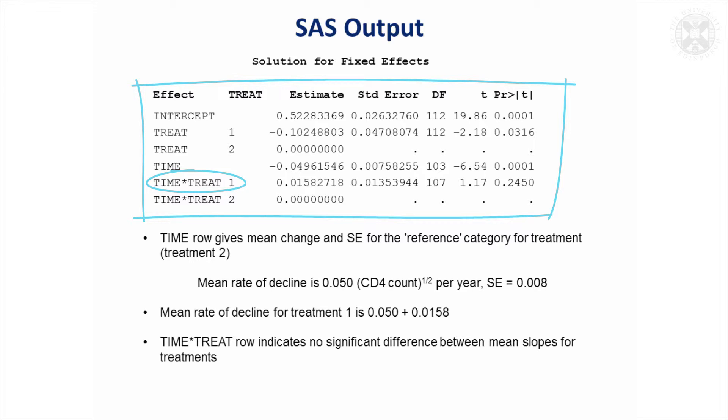And if we want to get an estimate of the slope for treatment one, then we have to add on this 0.158 term here. I haven't actually recalculated that. There's a mistake there. I need to add on this value here to get the slope for treatment one. So that's the sort of output you would get in any package fitting a random coefficients model.